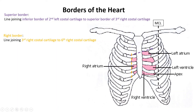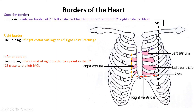The inferior border starts at the sixth costal cartilage and goes to the fifth intercostal space. Counting the ribs: first rib, second rib — the space between them is the first interspace — then second, third, fourth, and this is the fifth space. So the inferior border ends in the fifth intercostal space along the MCL, starting from the inferior part of the right border and going to a point in the left fifth interspace on the MCL.